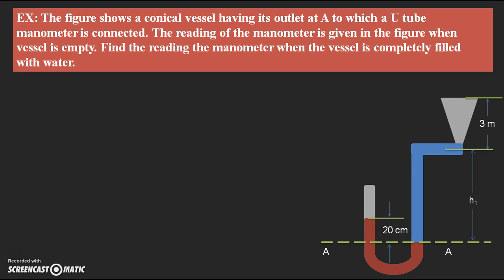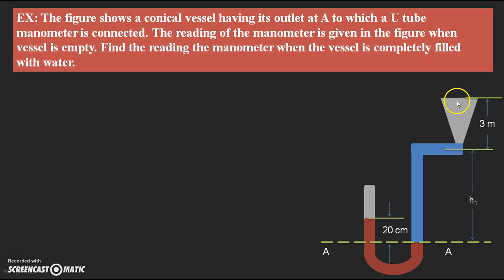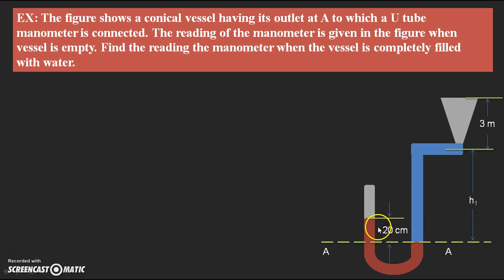For this figure, with the given data on the figure itself, we need to initially find the height of the water in the right limb of the U-tube manometer. This figure shows initially the vessel is not filled with water. The second case is when the vessel is completely filled with water, and in that condition we also need to find the manometer reading. Initially the manometer reading is 20 centimeters.